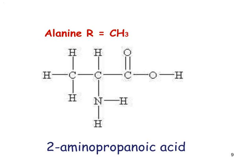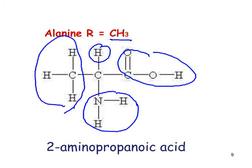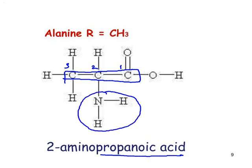Alanine is next, with a fairly simple structure since the R group is just CH3. We have the COOH group, the amine group, and the hydrogen — those are common to all 20 alpha amino acids — and then the R group. To name it correctly, we take the longest chain with the carboxyl group as carbon 1, giving us a three-carbon chain called propanoic acid. The amino group NH2 is on carbon 2, so the full IUPAC name is 2-aminopropanoic acid.